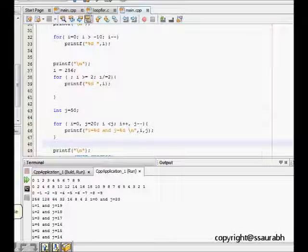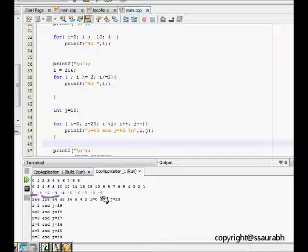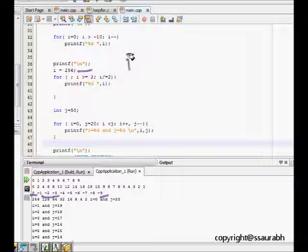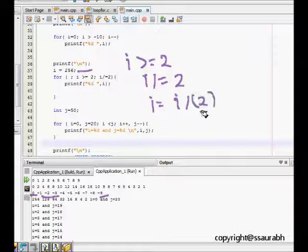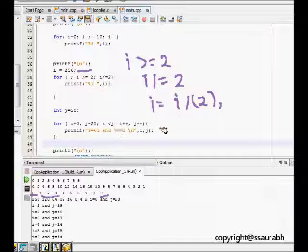What happens in the next example is that we have i is equal to 0, we go i minus minus till i is greater than minus 10 and we see that 0 minus 1 minus 2 till minus 9 is printed. This is also simple. Next we see some more variations. One variation is that we cannot give any initialization.